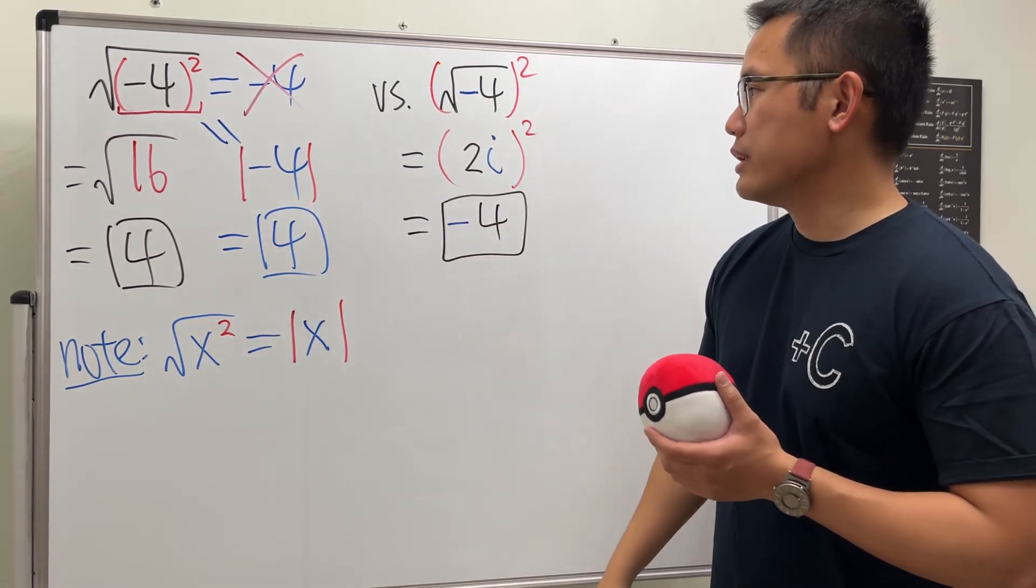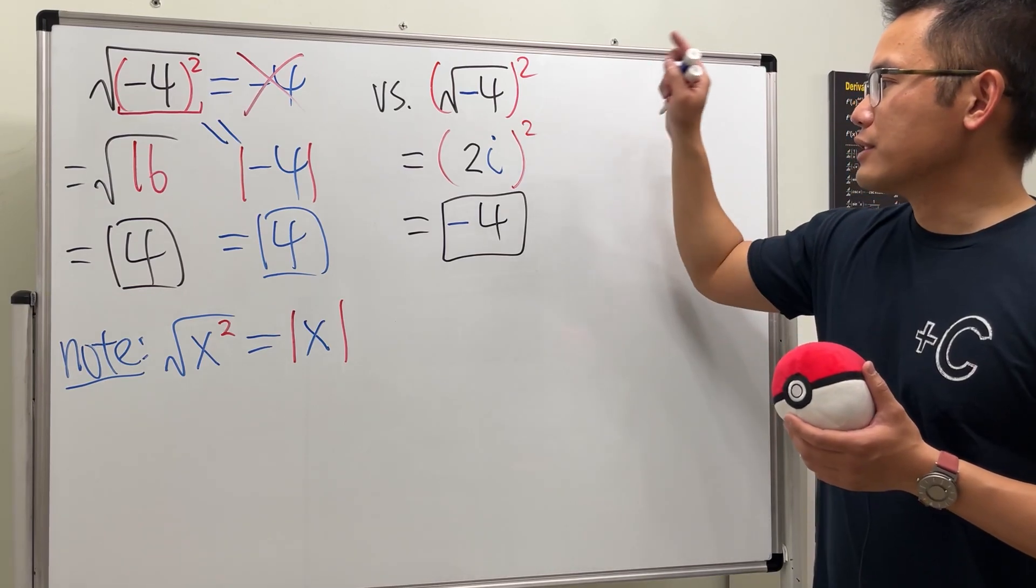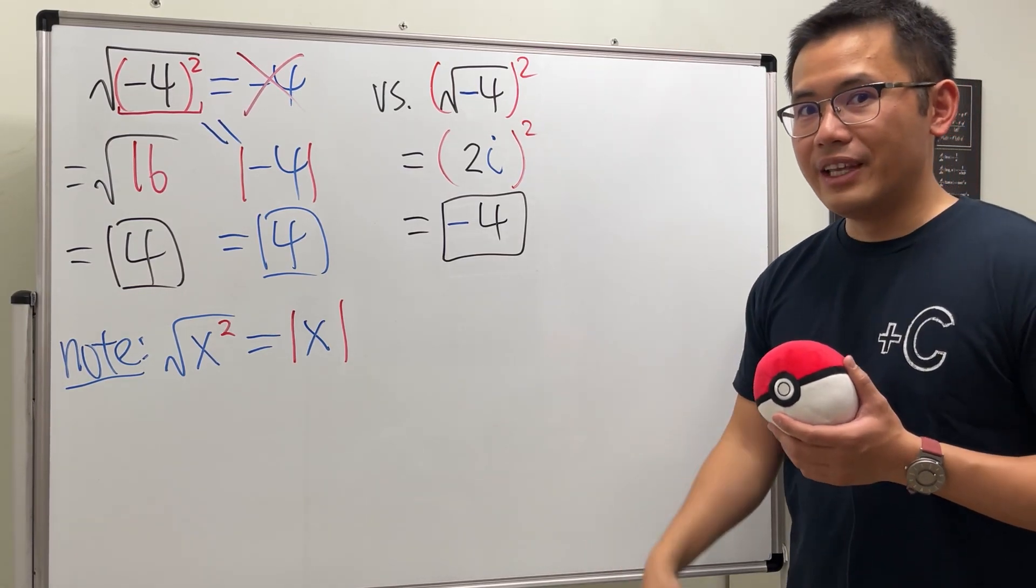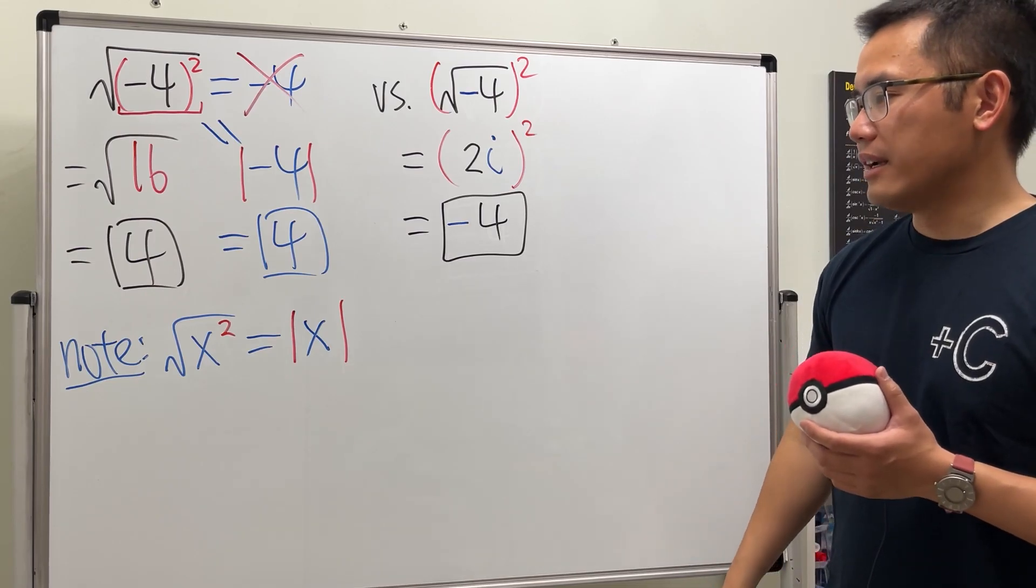So that is how you do it. But for this one, if the square is on the outside, if we have the imaginary number, then the answer is negative 4.